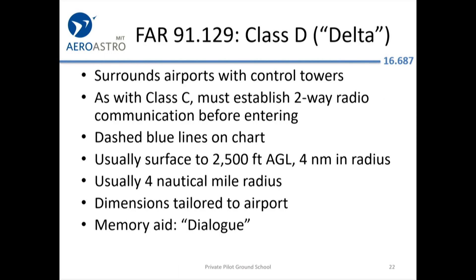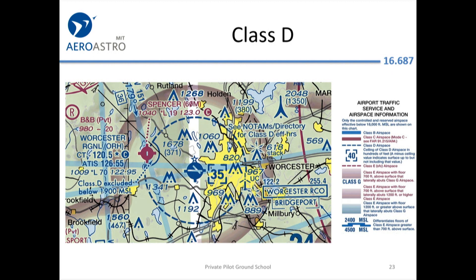Class Delta — one of the airports we've been talking about, Hanscom, also known as Bedford, is a Class Delta airport. Here you also have to establish two-way radio communication. It's indicated by a dashed blue line. This is an example of Worcester airport — you can see the dashed blue circle around the airport.